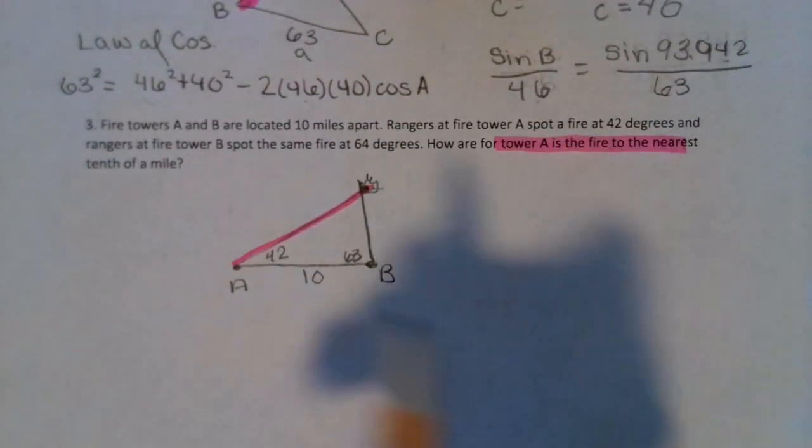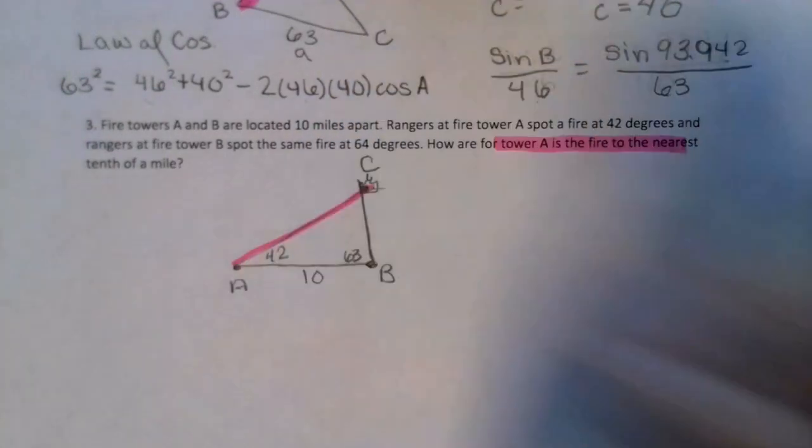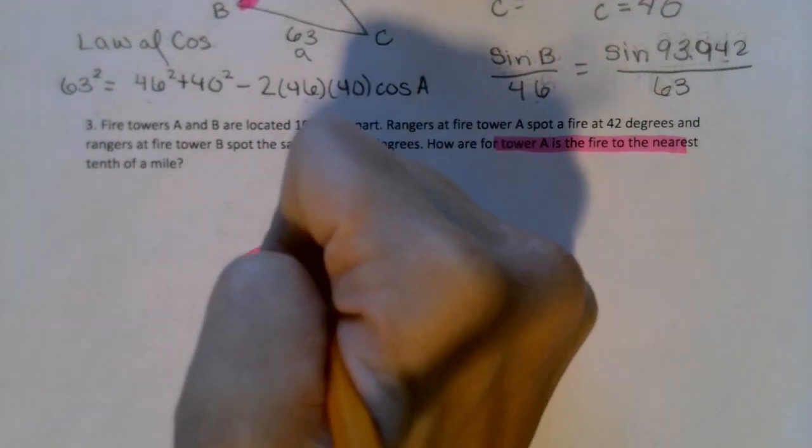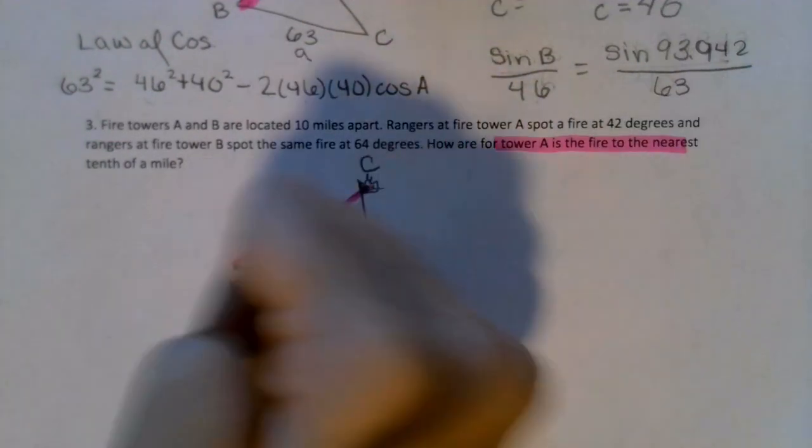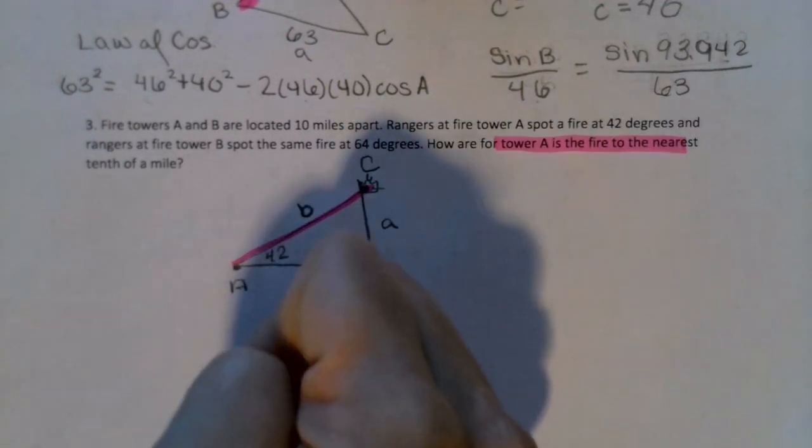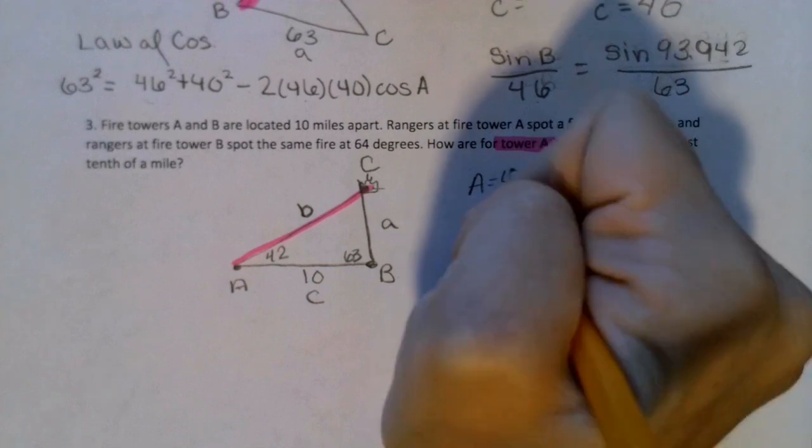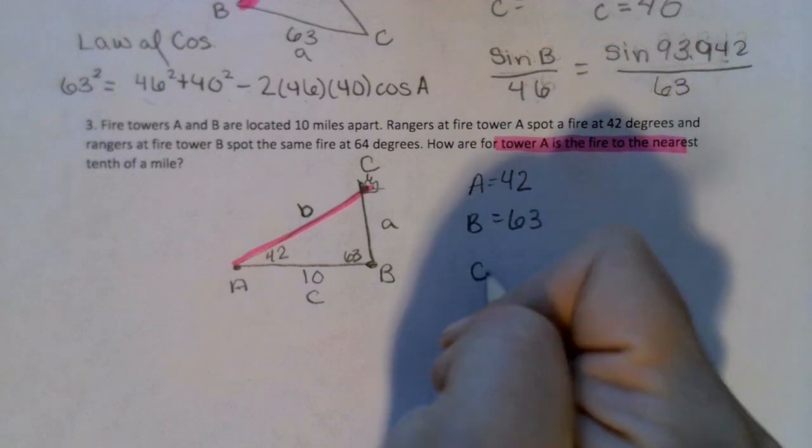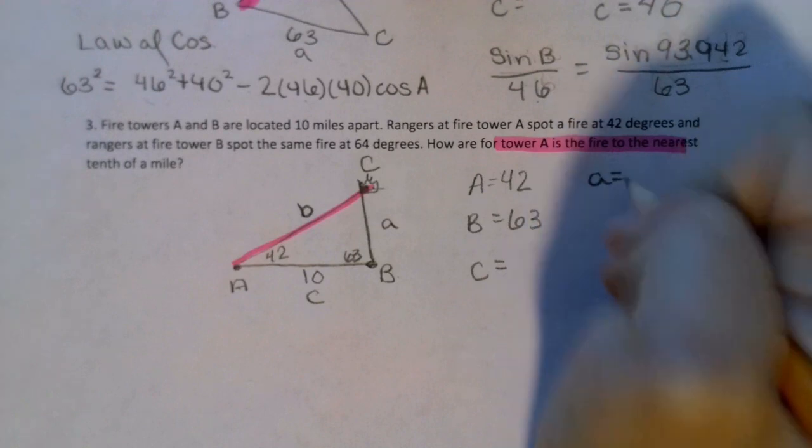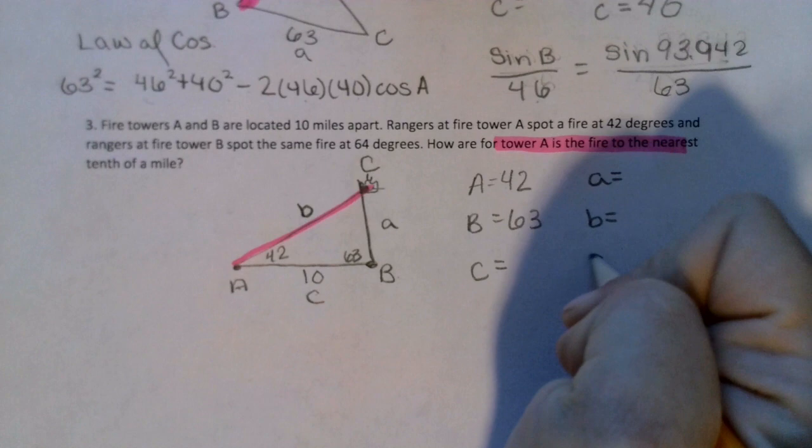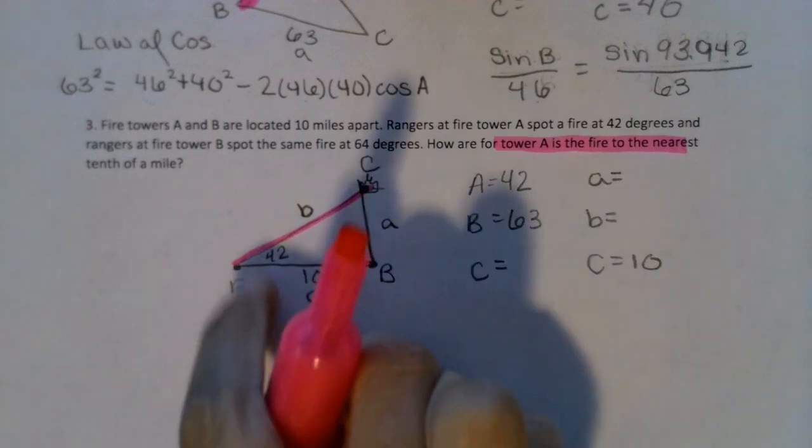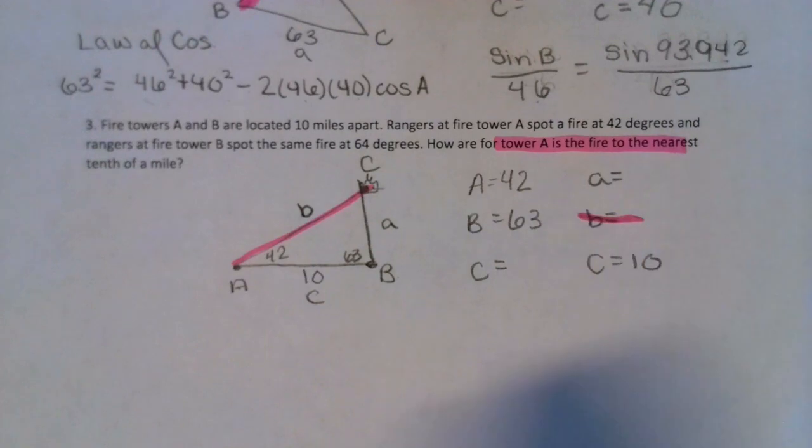So we are trying to find how far the fire is from tower A. What's nice about this problem is it starts being A, B, which automatically makes the fire C. So let's remember the angle and the side length across from it, that relationship. So there is side b, side a, and side c. Angle A is 42. Angle B is 63. Angle C we don't know. Side a we don't know. Side b we don't know. But side c is 10. We are trying to find that side from A to C, which is our side b. We have angle, angle, side.